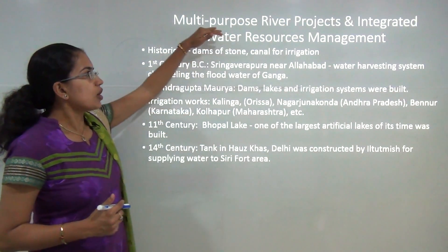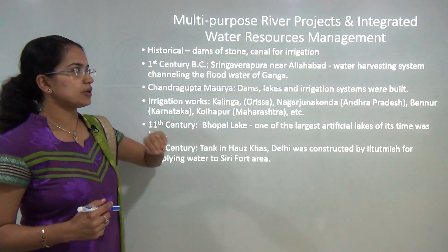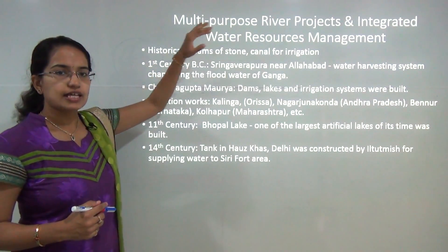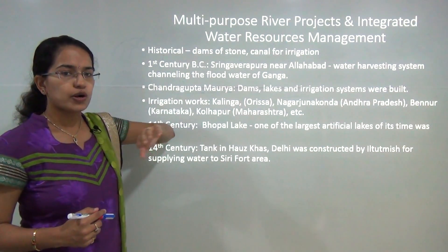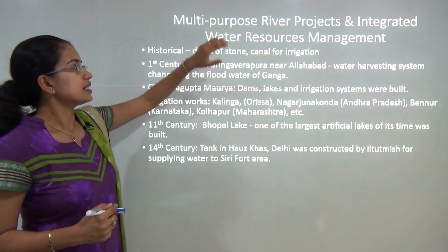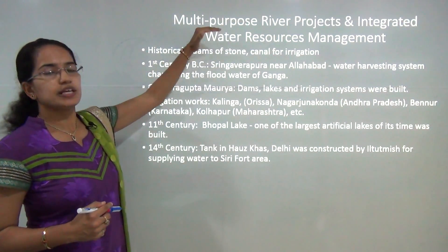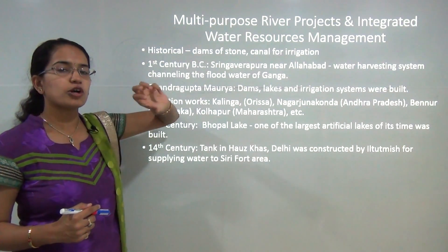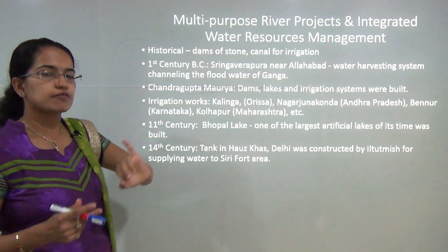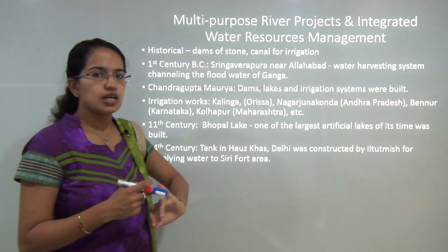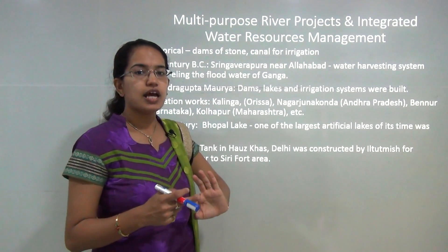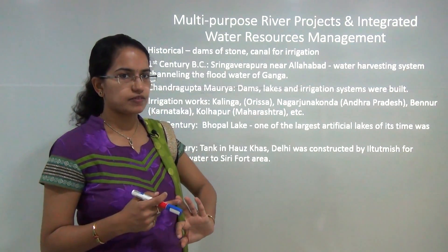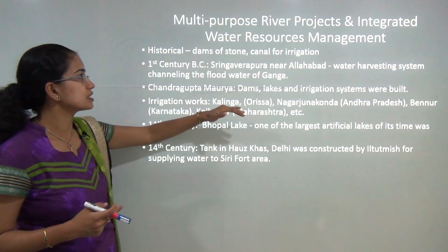When we talk about multi-purpose river valley projects, Pandit Jawaharlal Nehru called these the 'temples of modern India.' As the name suggests, they are multi-purpose — not only providing a water source, but also helping in irrigation and all allied agricultural activities. We will see later how it works.